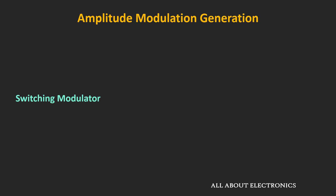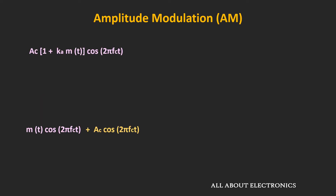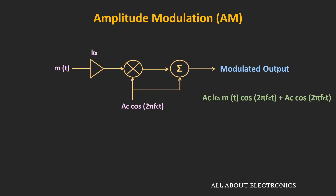In the earlier videos, we had seen that the amplitude modulated wave can be expressed by any of these two expressions. If we further simplify the first expression, then it can be written like this. In any case, we first need to multiply the carrier signal and the message signal, and then this signal needs to be added with the carrier signal. It is easy to add the two signals — even using the op-amp, we can add the two signals.